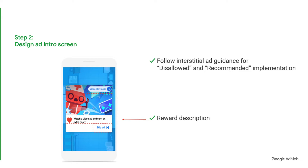Secondly, it must have a reward description to maximize its completion. There must also be an opt-out option. Both of these elements must be clear and unobstructed. Lastly, you must give the user enough time to understand the reward relationship and to opt-out if they are not interested. We recommend showing the intro screen for 3 to 5 seconds.